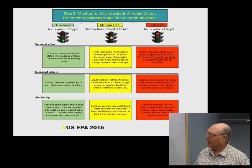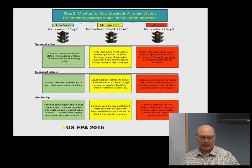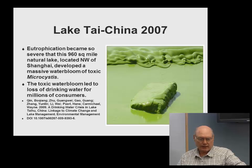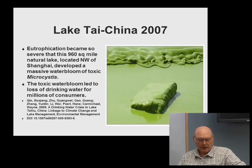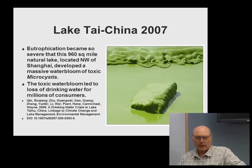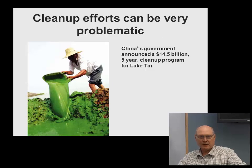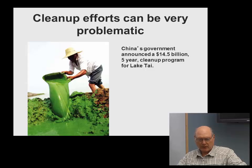As an extreme example, here's an overhead satellite photo of Lake Tai, or Tai Wu, in China around 2007. This lake switched from being eutrophic to hyper-eutrophic. It's about a thousand-square-mile natural lake with a massive bloom of Microcystis that shut down drinking water for about five million customers. This is what you want to avoid — this is why we approach management and mitigation.